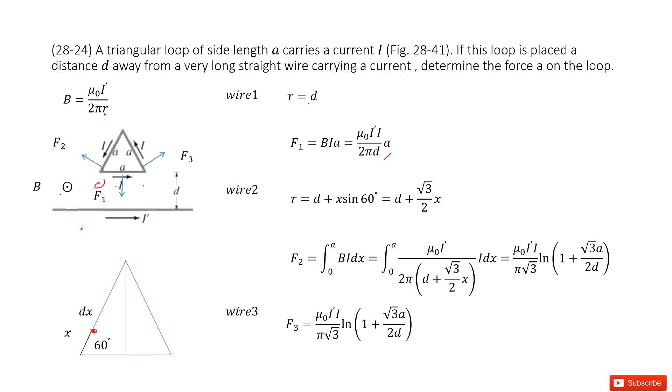The distance from the bottom wire to dx is d plus this length. This length we can write as x·sin(60°) because this is a triangle with equal side lengths, so this angle is 60°. So this length is x·sin(60°). Now r = d + x·sin(60°), so r is solved.